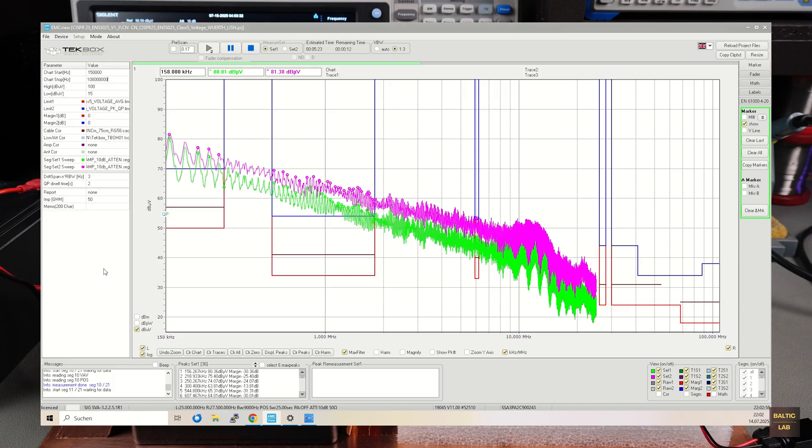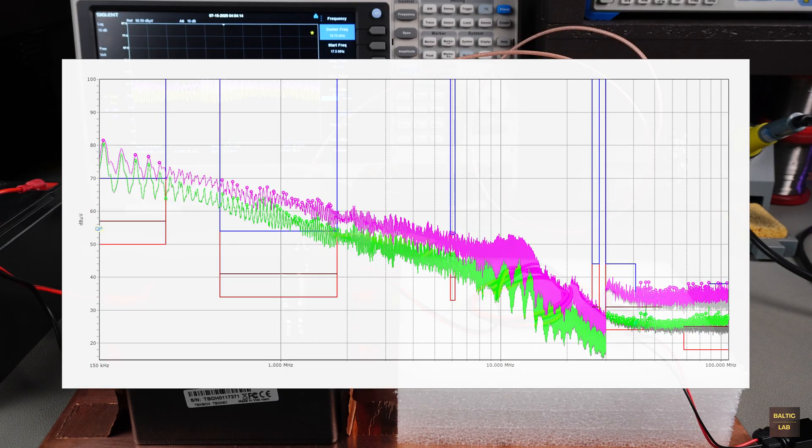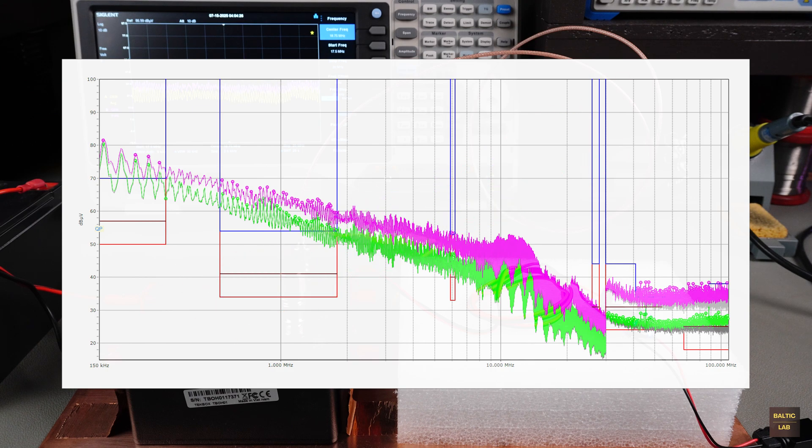The limit violations exceed 30 dB, putting them clearly in the critical range, even though the logarithmic display makes it look less dramatic at first glance. Just to recap, a 20 dB excess means the interference voltage is 10 times higher than allowed. At 30 dB, it's roughly 32 times over the limit. In its current state, the buck converter exceeds the allowed limits at 238 measurement points.